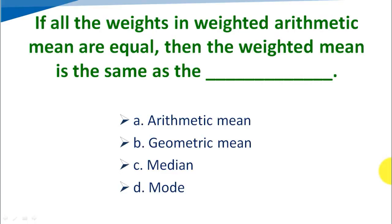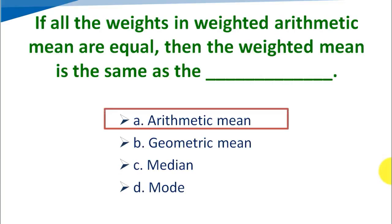If all the weights in weighted arithmetic mean are equal, then the weighted mean is the same as which measure? Option A: arithmetic mean, Option B: geometric mean, Option C: median, Option D: mode. The correct answer is arithmetic mean.